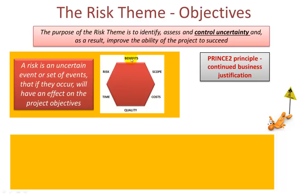Here we can see the six objectives: risk itself, because a project may be too risky; benefits; scope — what you're including and what you're not; costs, which may increase or decrease; quality; and time — in other words the schedule and timeframe of the entire project.